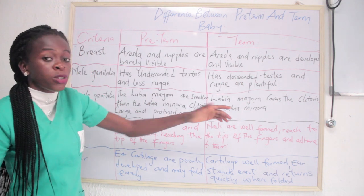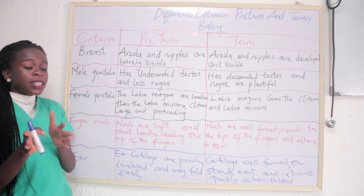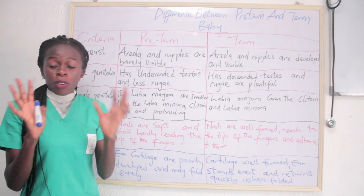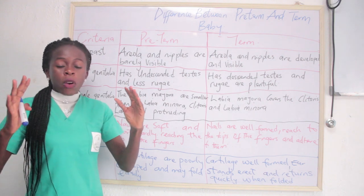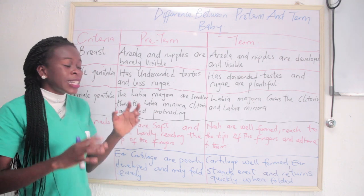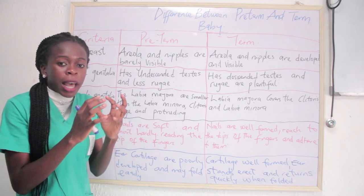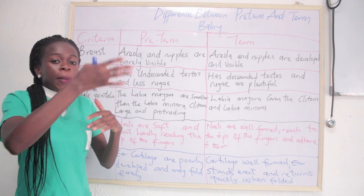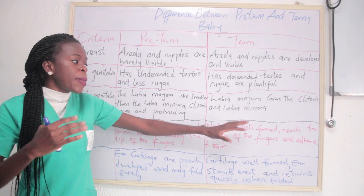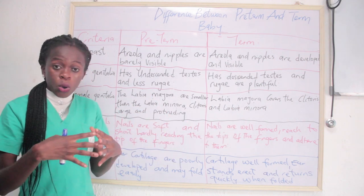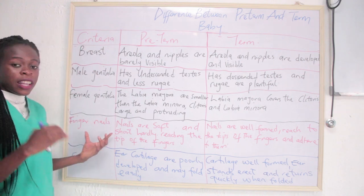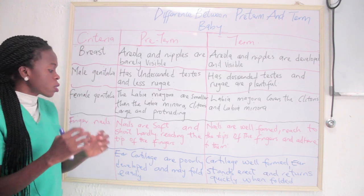For female genitalia, in pre-term babies the labia majora is smaller — you can see the clitoris and labia minora protruding more. In term babies it is normal: the labia majora covers the clitoris and the labia minora. Another difference is the fingernails: for pre-term babies the nails are soft and short, hardly reaching the fingertips.